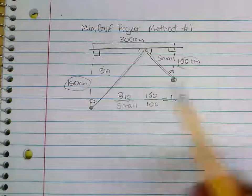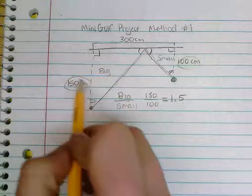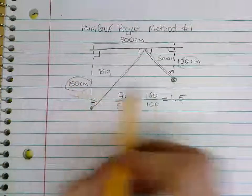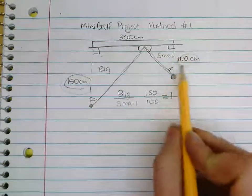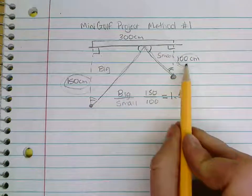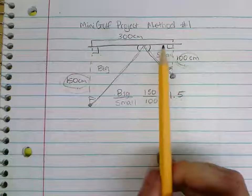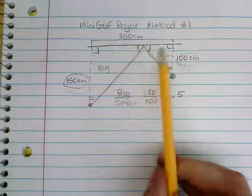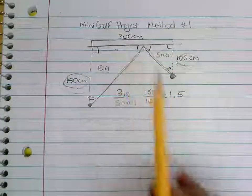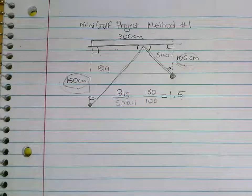This 1.5 means that this measurement here, 150, is 1.5 times the measurement of 100. If we took 100 and we multiply it by 1.5, we would get to 150. So if they're going to be proportional, I need that to be true about the measurements against the wall of both of these triangles as well.